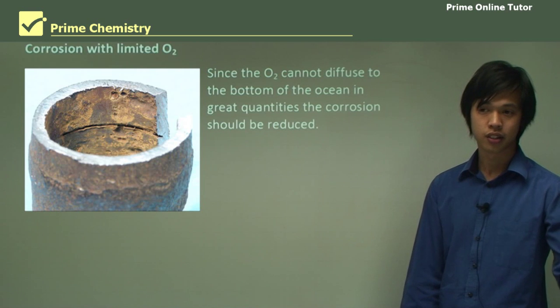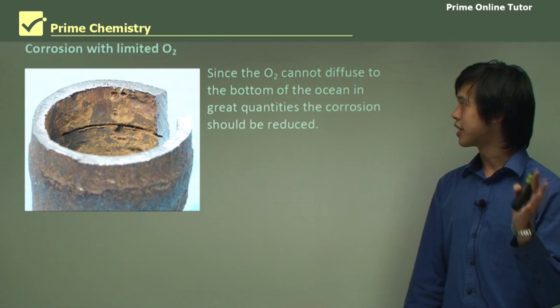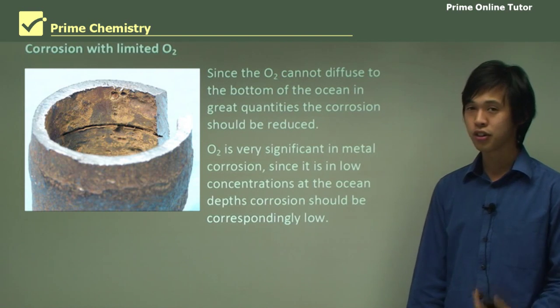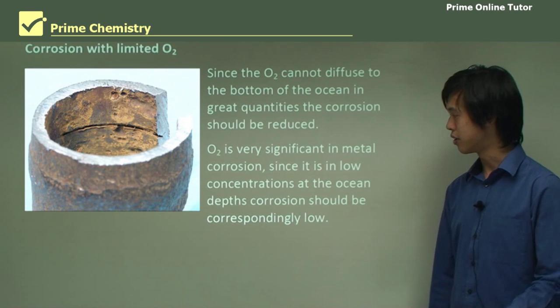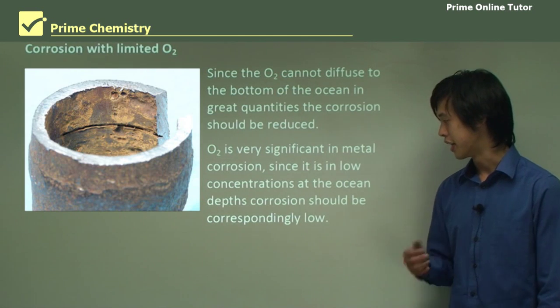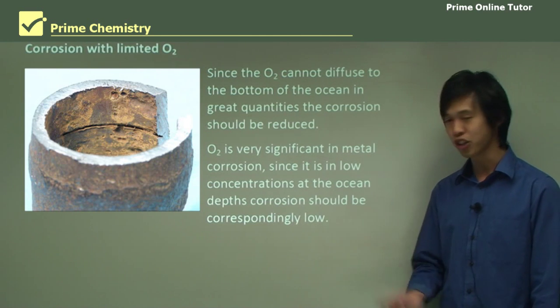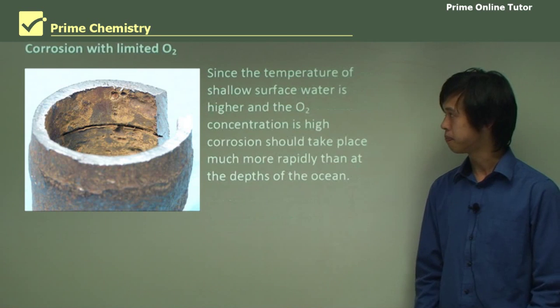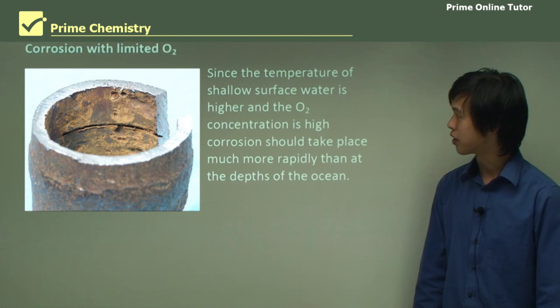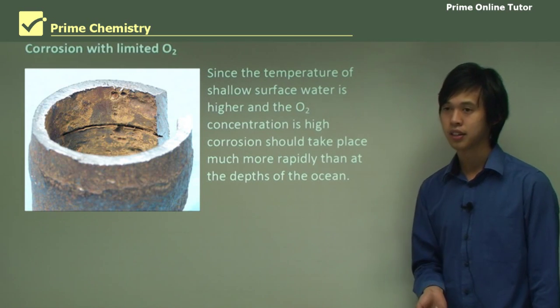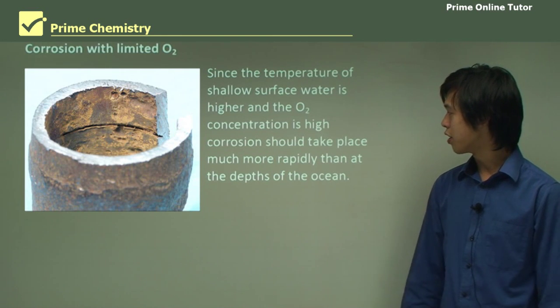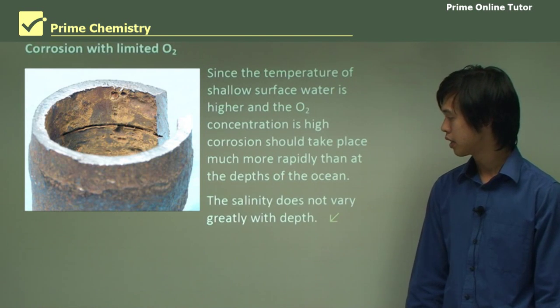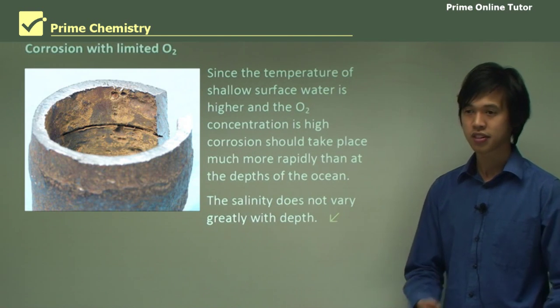Now if we move from the temperature to the limited O2 availability, then since the oxygen can't diffuse that deep into the ocean, then we expect corrosion to be reduced. Now O2, as we know, is a very significant element in metal corrosion, and since its concentration is so low, the corresponding corrosion rate will be very low as well, because there's no oxygen available. So that's sort of what we predict. Now since the temperature of the shallow surface water is higher, and the O2 concentration is also quite high because of the constant mixing with the air, then corrosion should take place much more rapidly in the shallow regions compared to the depths. So the salinity doesn't vary greatly with depth, so that's not going to affect our corrosion too much.